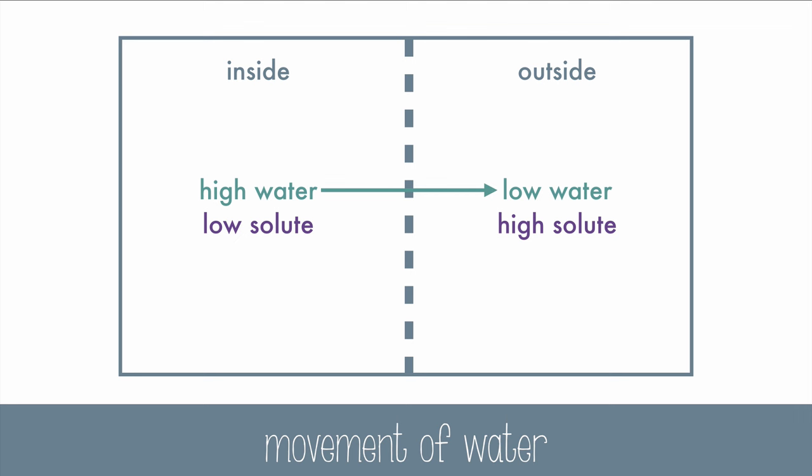but we know that water can always move across semi-permeable membranes. So in this case, water will move from the left side to the right side until the concentration of water and solute is equal on both sides. That means it's flowing from a hypotonic solution to a hypertonic solution.